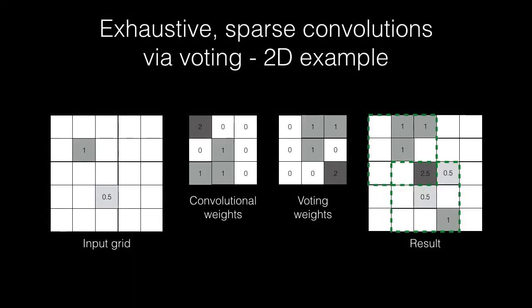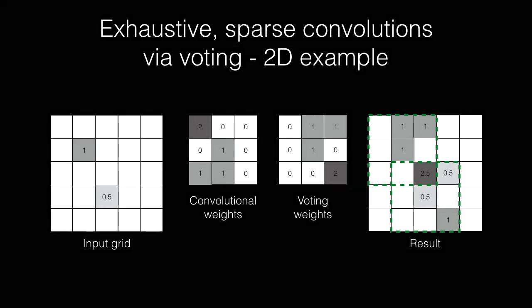The result is mathematically equivalent to a traditional convolution, but the computation time is proportional to the number of non-empty input cells rather than the spatial dimensions of the input.